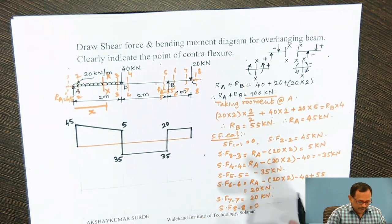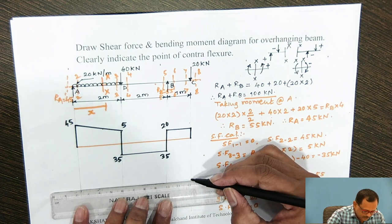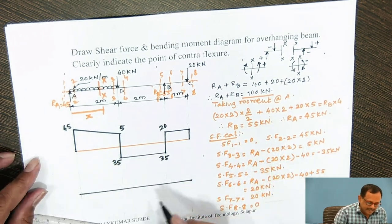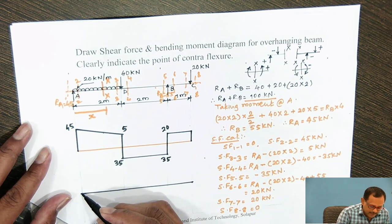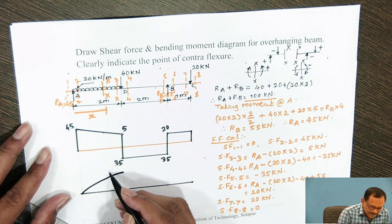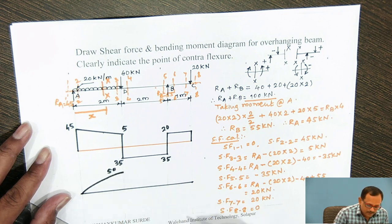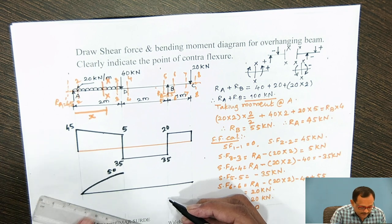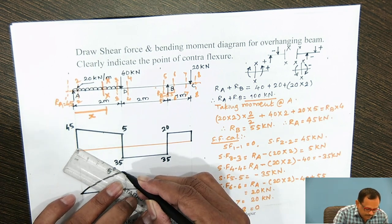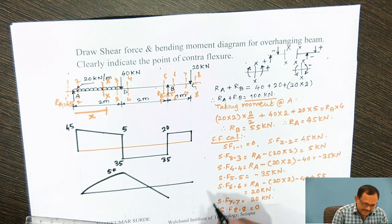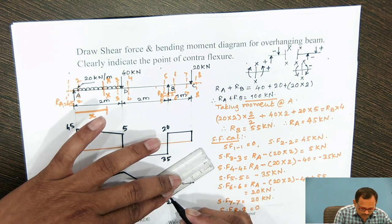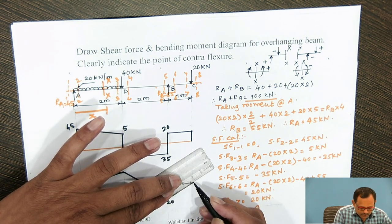Now we will draw the Bending Moment Diagram. At A, bending moment is 0. At D, bending moment is 50 kN·m, varying according to a parabolic curve from A to D. At B, the bending moment is minus 20 kN·m; between two point loads, the bending moment varies linearly. At C, the bending moment is 0, so it goes from minus 20 to 0.